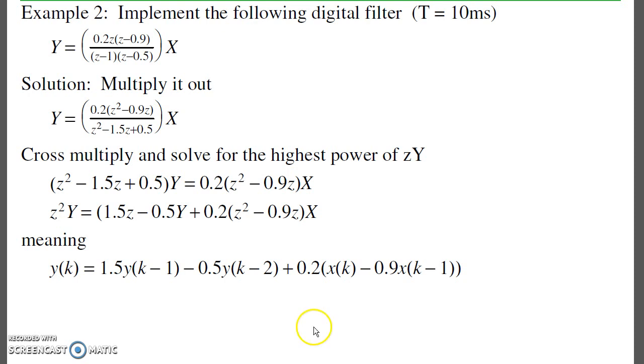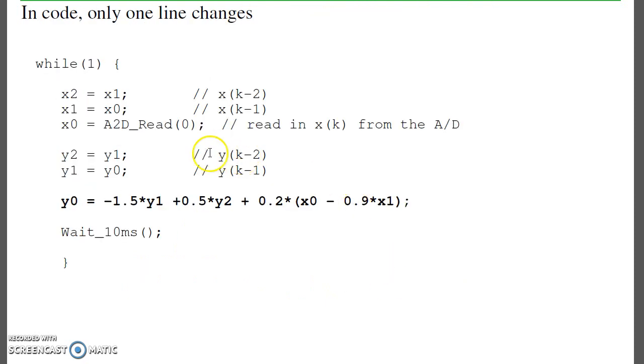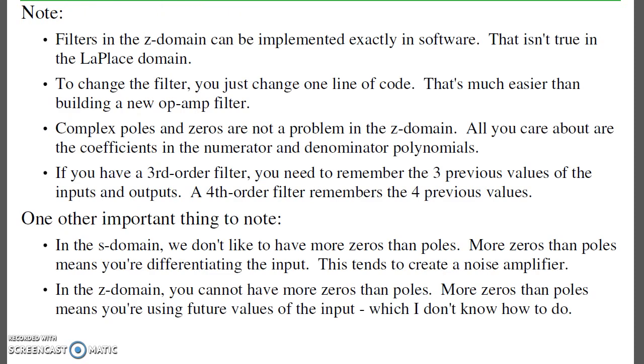Second example. Suppose I want to implement the following second order filter. The trick is multiply it out, cross multiply, solve for the highest power, and there's y of k. In software, all I do is just change one line of code. Everything else stays the same. So that's the beauty of Z transforms. If I want to change the filter, change one line of code, I've got a new filter. It's very easy to change filters in software.